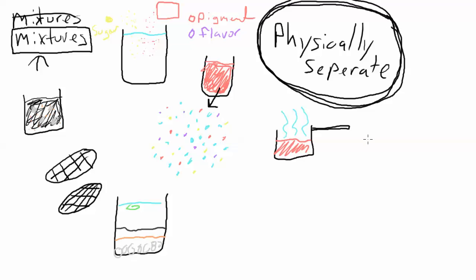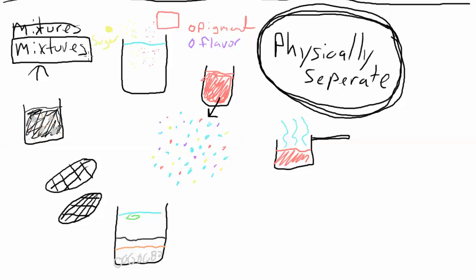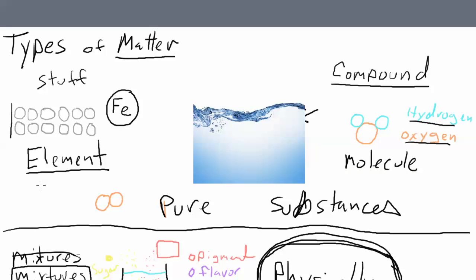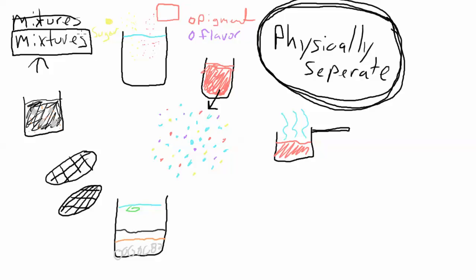So there you go - you've got the three main types of matter we're going to be looking at in this class. You can actually divide mixtures into two different types but we'll save that for another lesson. To sum up: elements are made up of all the same type of atom; compounds like water are made up of two or more different elements bonded together; and mixtures are made up of two or more different substances that you can physically separate. That's the end of this first online lesson - thanks for watching, we'll talk to you soon.